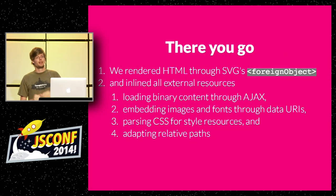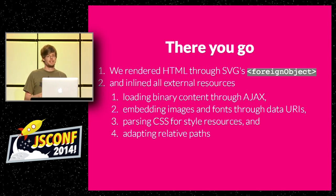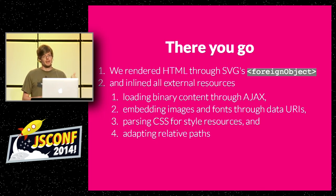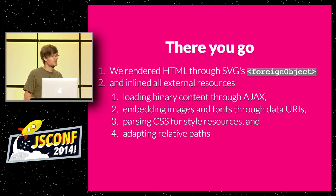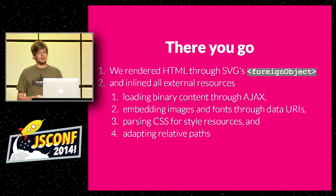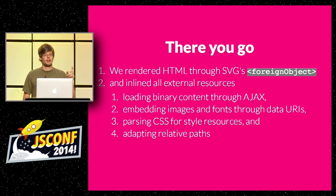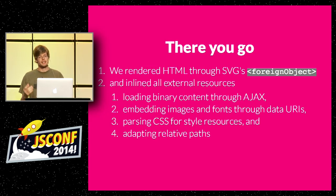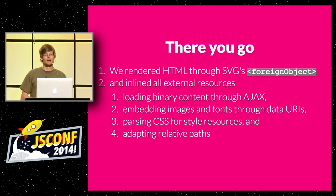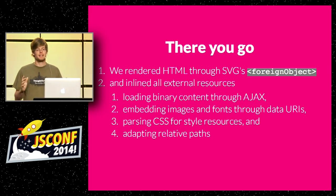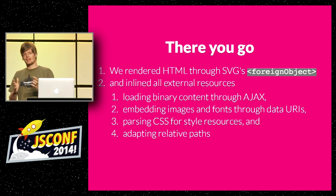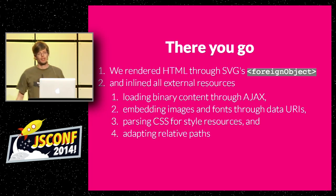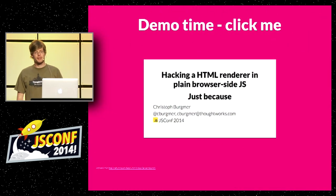So basically we rendered HTML through an SVG foreign object. We inlined all external resources by loading content through Ajax — for binary content, we did an extra hack. We embedded images and fonts through data URIs. For style sheets, we pasted the whole text, parsed CSS for resources needing adaptation, and fixed relative paths. That's the whole algorithm for getting HTML inside an SVG rendered to the canvas. Less talking, more demo time.